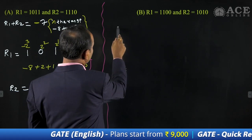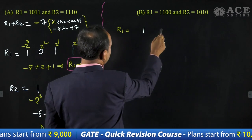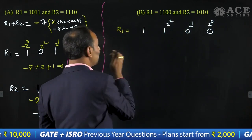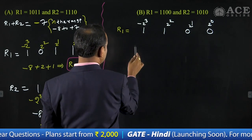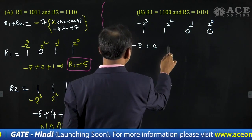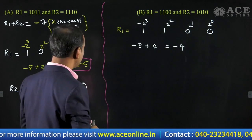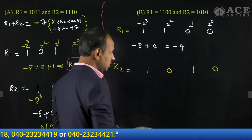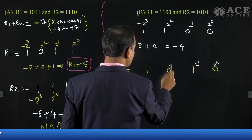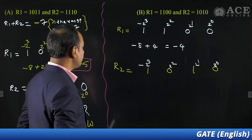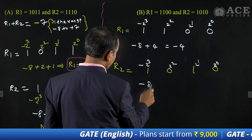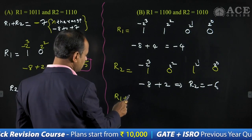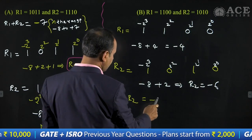Now checking option B with the range method. R1 equals 1100. In two's complement: minus 8 plus 4 equals minus 4. R2 equals 1010: minus 8 plus 0 plus 2 equals minus 6. So R1 plus R2 equals minus 4 plus minus 6 equals minus 10.